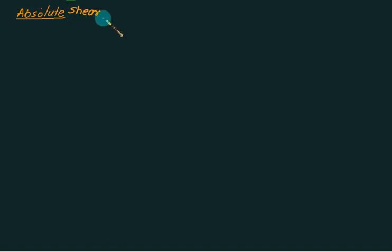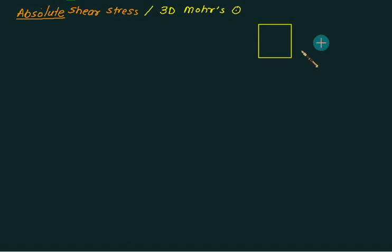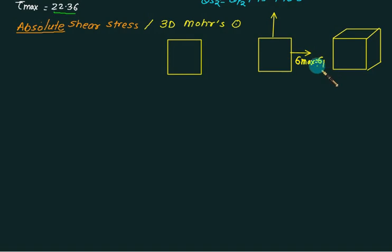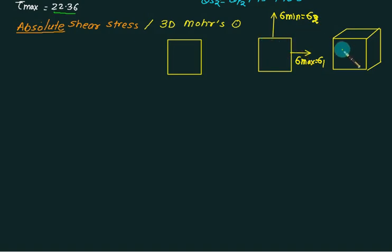To find the maximum shear stress in three dimensions using the Mohr circle, consider both a two-dimensional and a three-dimensional element. In 2D, we have sigma x and sigma y. To convert from 2D to 3D, we identify the principal stresses: sigma one along the x-face, sigma two along the y-face, and sigma three equal to zero on the z-face, effectively converting the 2D element into a 3D element.